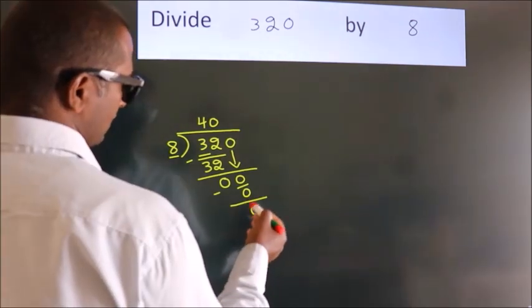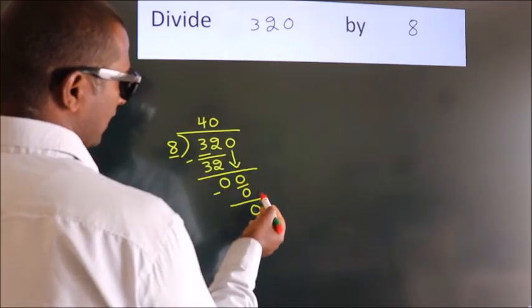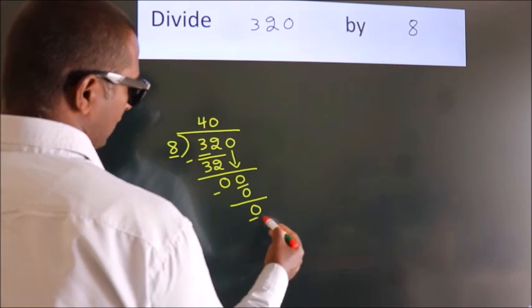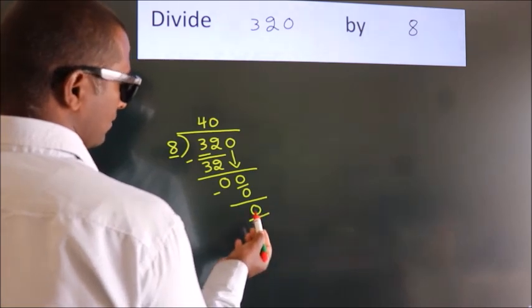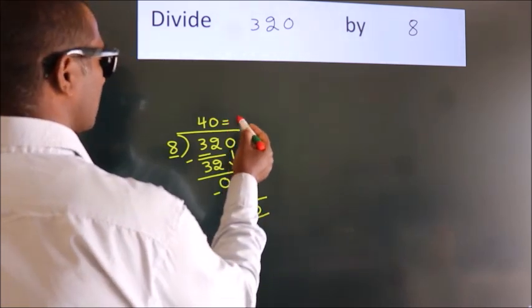After this, no more numbers to bring down. And we got remainder 0. So this is our quotient.